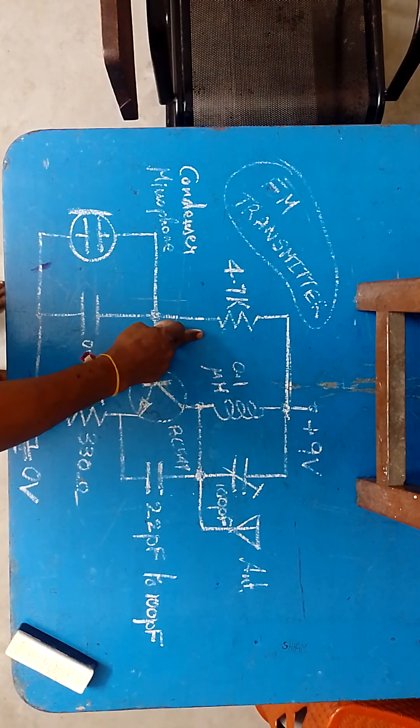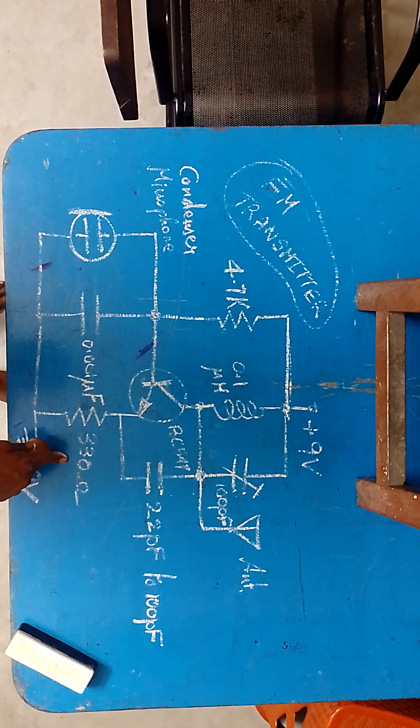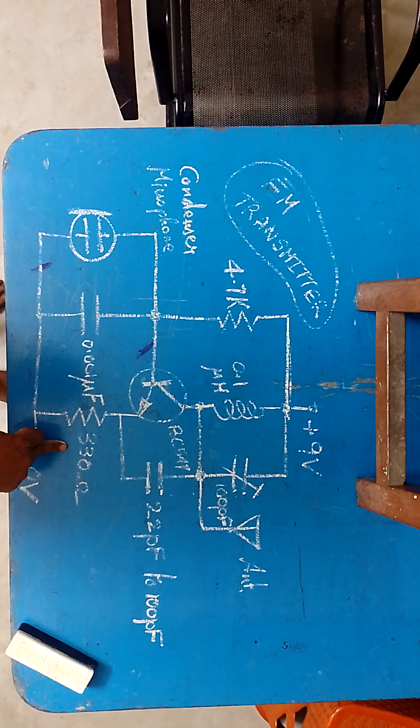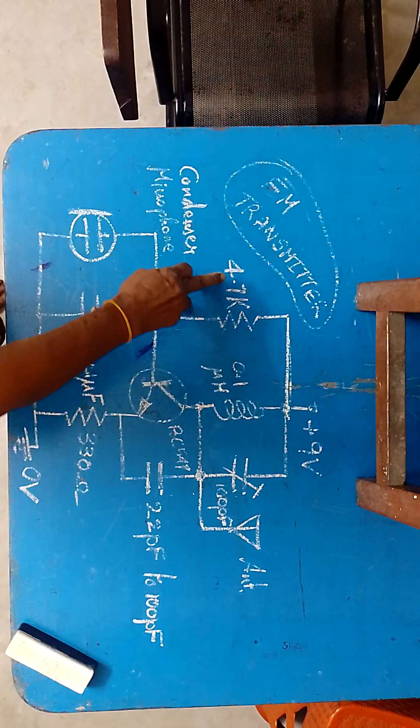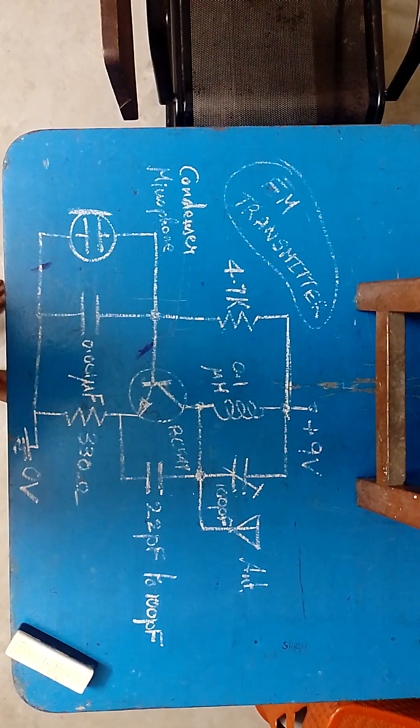This 4.7K and 330 ohms. This 330 ohms is for emitter stabilization to make the Q point stable. We are using this 330 ohms. And the exact Q is fixed by us by using this base resistor 4.7K.